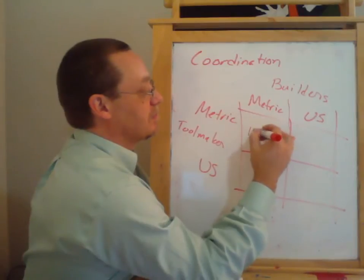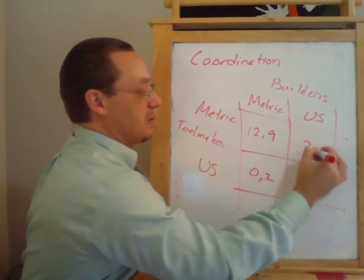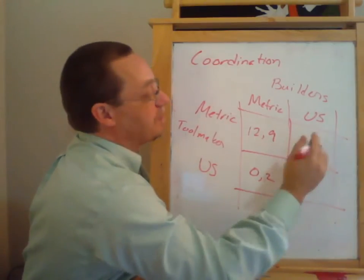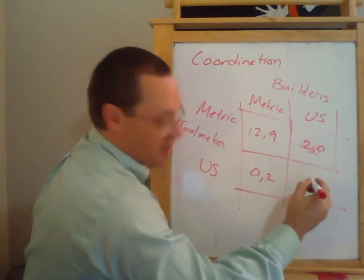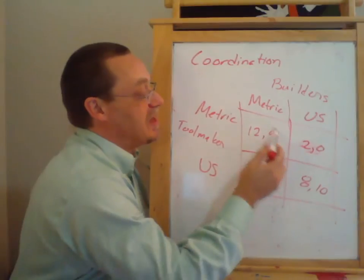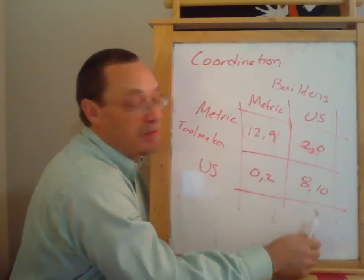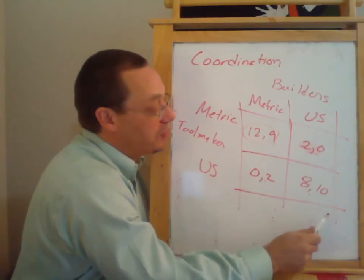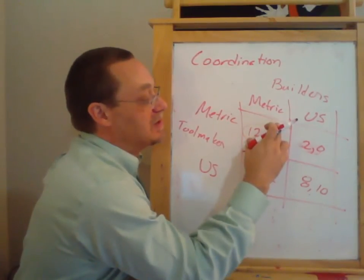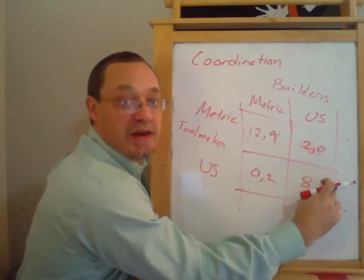I'm going to suppose that metric is actually superior. You can see that the overall payoffs here are higher than in this square down here — with payoffs of 2, 0, and 8, 10 on one side versus higher totals on the metric side. But the important thing is for the two different groups to actually coordinate on what they're going to do. The best outcome is here, the second best outcome is here, but the worst outcomes are when they choose different strategies entirely.